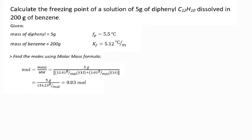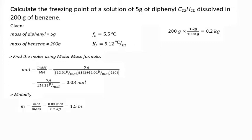Next, we convert the mass of benzene into kilograms: 200 grams equals 0.2 kilograms. We can now calculate the molality: 0.03 mol divided by 0.2 kilograms, which equals 1.5 m.